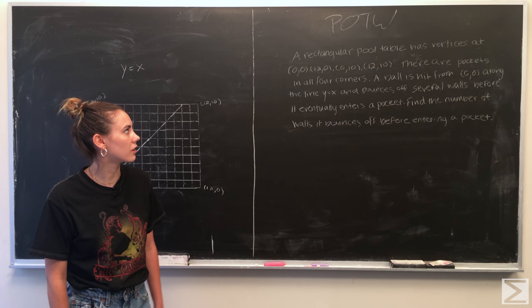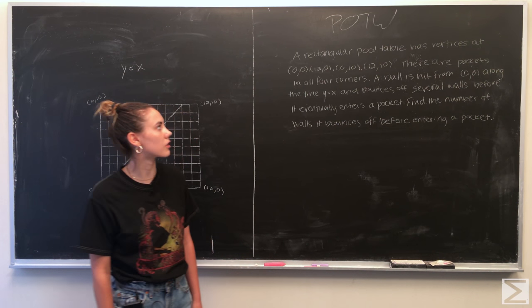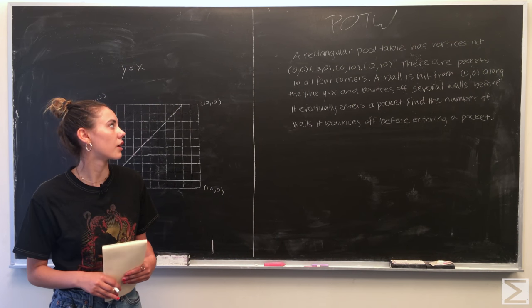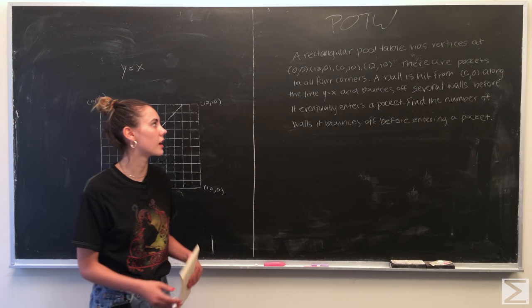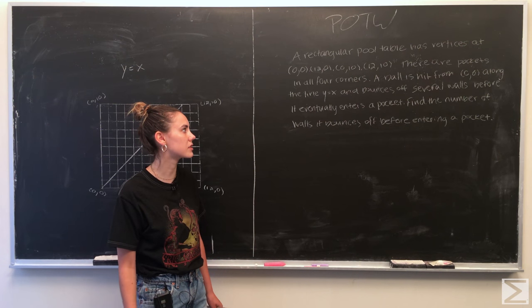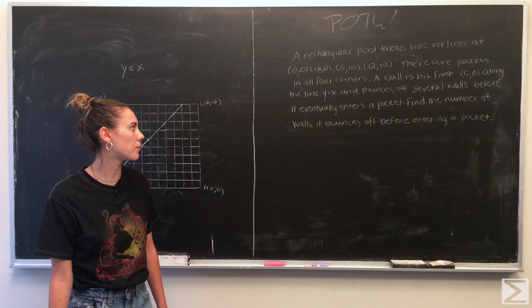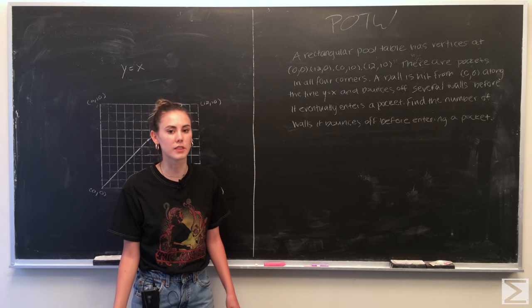So the problem is a rectangular pool table has vertices at (0,0), (12,0), (0,10), and (12,10). There are pockets in all four of these corners, and a ball is hit from (0,0) along the line y equals x, and bounces off several of the walls before it eventually enters a pocket. Find the number of walls it bounces off before entering that pocket.